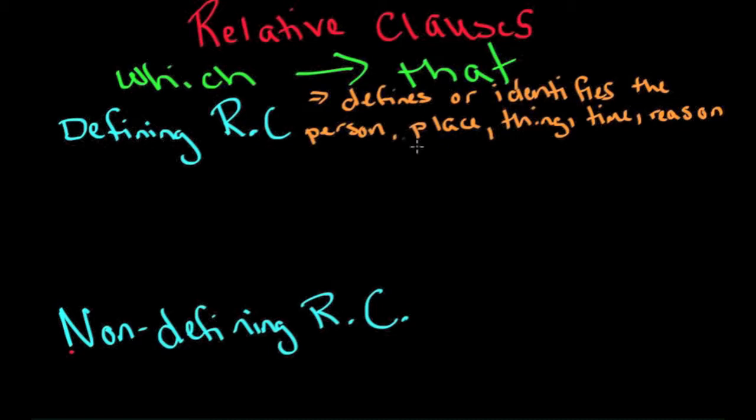Now remember last week we said with person we're going to use who or that. With place we're going to use where. With thing we're going to use which or that. With time we're going to use when. And with reason we're going to use why. And we talked about those last week, so if you need to review those, go ahead and look at last week's lesson.